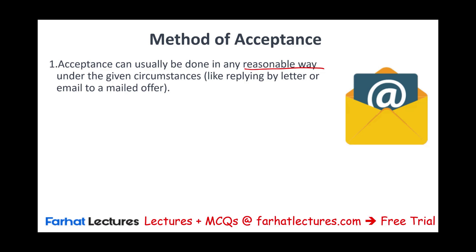Then we have the mailbox rule. Unlike revocation, which is effective when received, acceptance is generally effective upon dispatch. Dispatch is when you send the mail — when you put the mail in the mailbox. When you click the send button in your email, that's a dispatch. As long as the acceptance is correctly addressed upon dispatch, acceptance is effective. This is known as the mailbox rule. It does not matter if the acceptance gets lost or delayed — it's considered effective once sent.